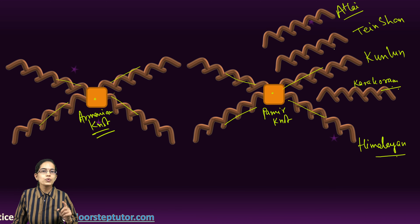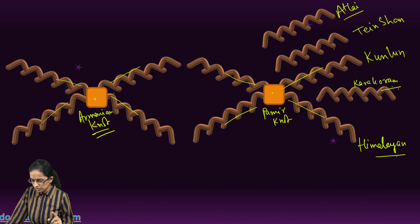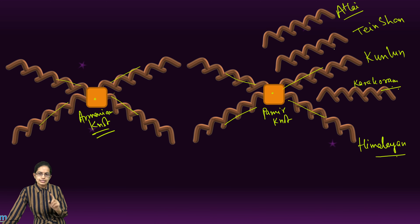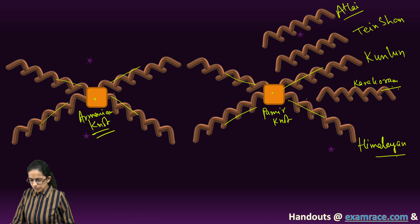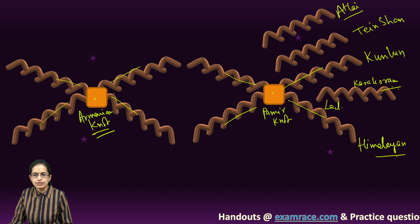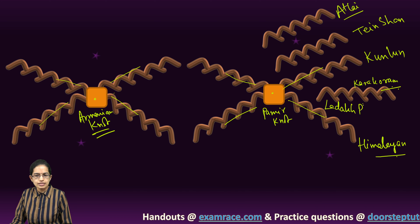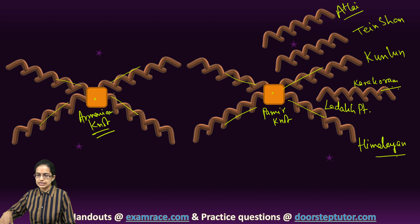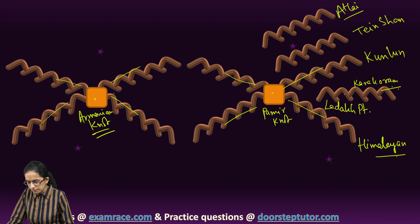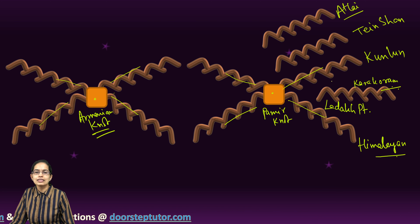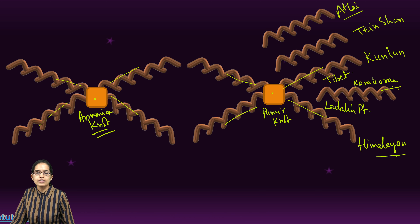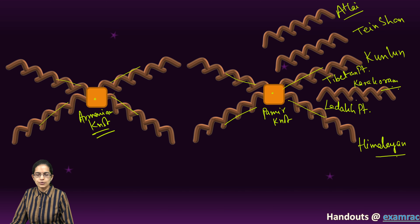Now two important plateaus in this area. Between the Himalayan and the Karakoram region you have the Ladakh plateau — that is the region of Ladakh in India, the present region of Ladakh. North of the Karakoram, between the Karakoram and the Kunlun, is the Autonomous Region of Tibet, and you have the Tibetan plateau there.